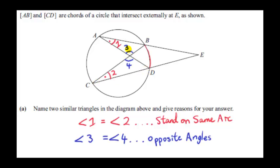The angle I'm calling 3 equals the angle I'm calling 4 because these are opposite angles. We can name this intersection point X, so angle AXB equals angle CXD. We've now found two similar triangles because two angles are the same in both triangles, so this triangle is similar to this triangle.